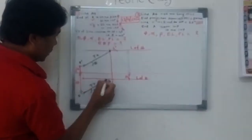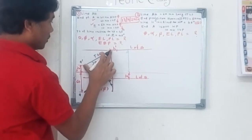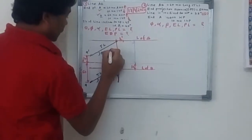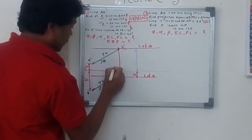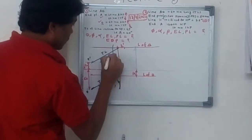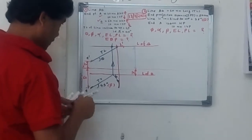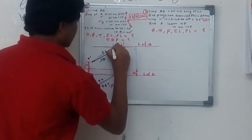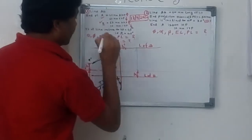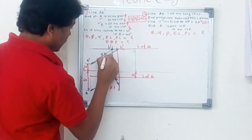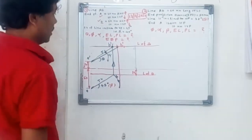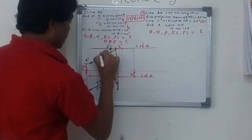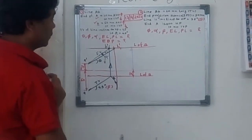Once you know this distance, go straightway upward where it cuts to the locus line and draw a horizontal line. Here you will get the B dash point and this angle becomes alpha. This A dash–B dash line is now your front view, and this is the true length.